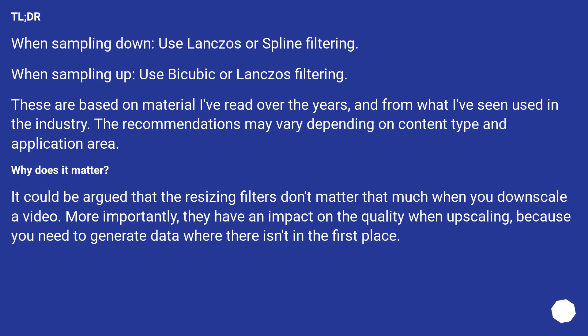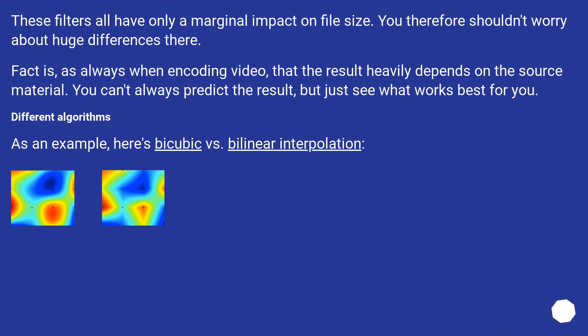It could be argued that the resizing filters don't matter that much when you downscale a video. More importantly, they have an impact on quality when upscaling, because you need to generate data where there isn't any in the first place. These filters all have only a marginal impact on file size, so you shouldn't worry about huge differences there. As always when encoding video, the result heavily depends on the source material — you can't always predict the result, so just see what works best for you.